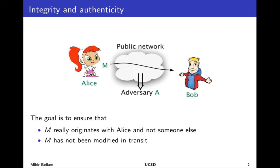When we studied symmetric encryption, our goal was to ensure that the adversary seeing this information doesn't result in loss of privacy of the actual data, done by encrypting before transmission and decrypting at the other end under some key. Now our goal is to ensure that if Bob gets a message m purporting to come from Alice — say an email where the header says this is from Alice — then that claim is really true, and if Alice had actually sent some message, what Bob gets is the same thing, unchanged.